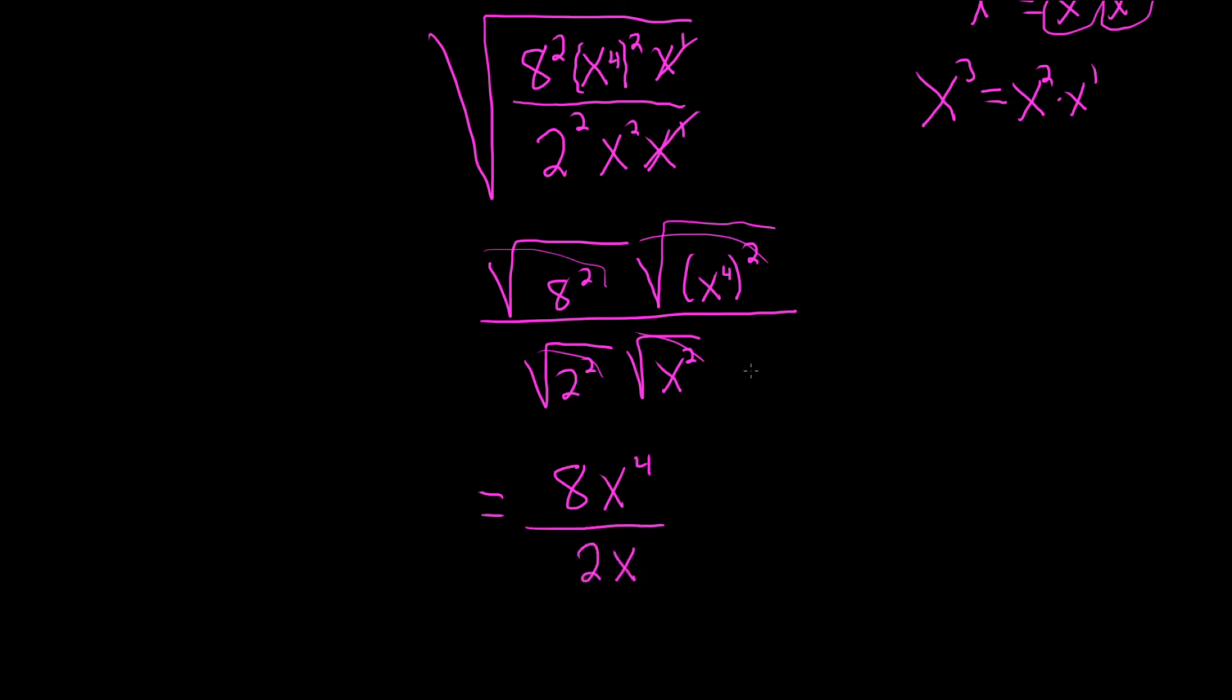Oh, look at that. We get more cancellation here. So we lose an x. There's 4 of them up here, and there's 1 down here. And 8 over 2 is 4. So we get 4x to the 3. And that would be the final answer.